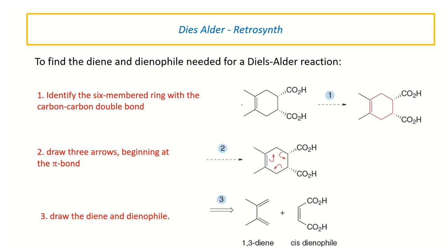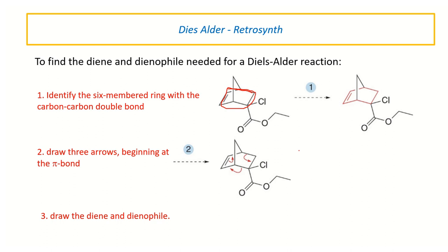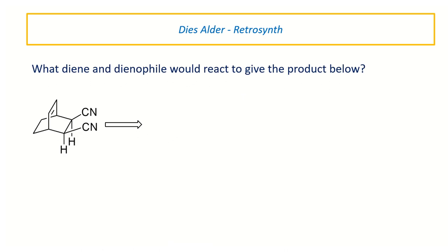A useful technique is retro-Diels-Alder analysis to identify the starting diene and dienophile. First identify the six-membered ring, then draw arrows showing bond-making and bond-breaking to generate the diene and dienophile. Groups that were cis on the ring will be Z in the dienophile. Try to work this out and we'll discuss it in class. That's the end of this section — the next section will be uploaded as a separate set of slides on a YouTube link.